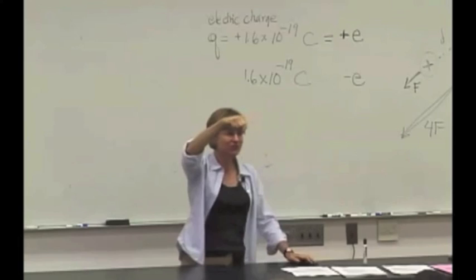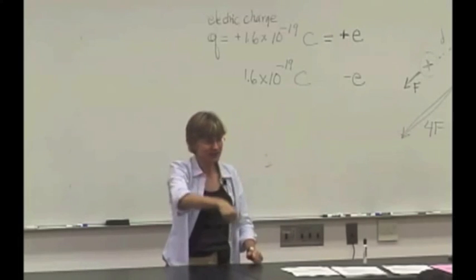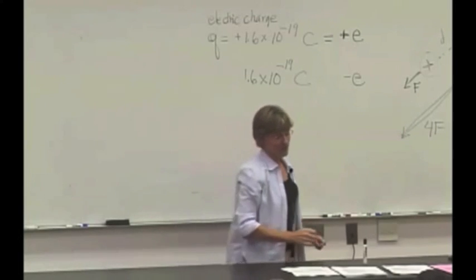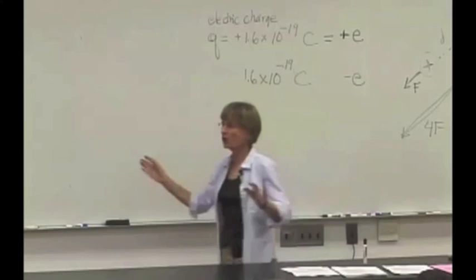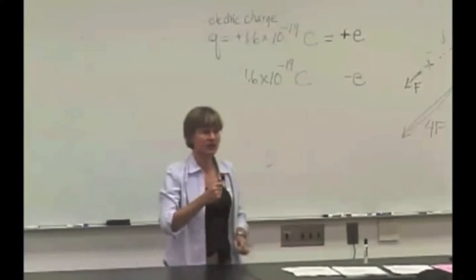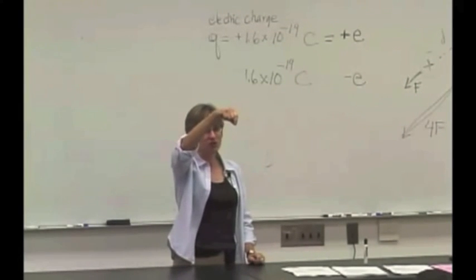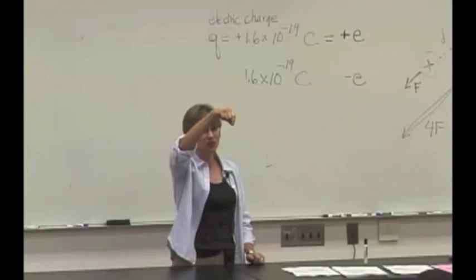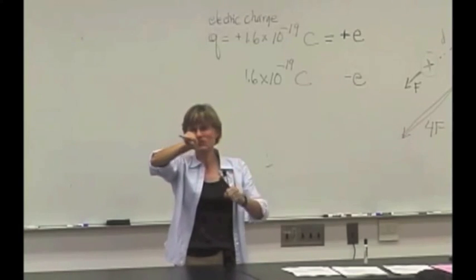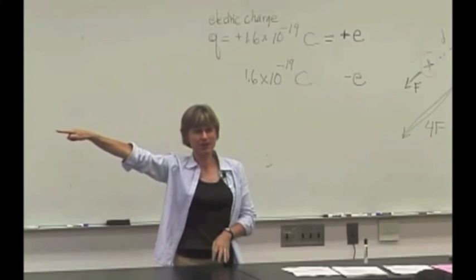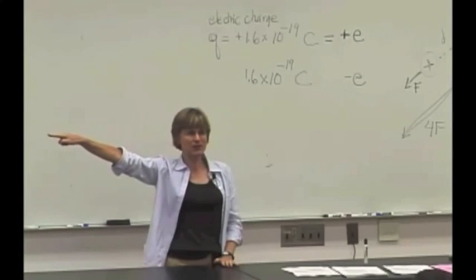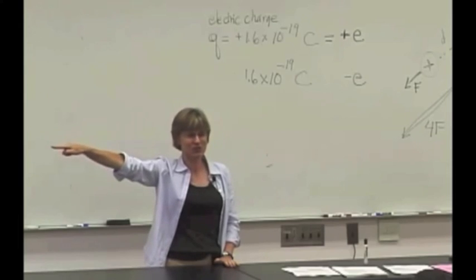So there was a gravitational field there, we would say, that affected the proton. Now I go away and I come back at a different time, and I release a different proton here at this observation location. And this time I discover that it actually starts to move that way and it speeds up at the rate of 10 to the 11th meters per second per second.